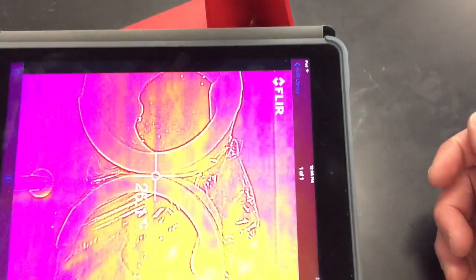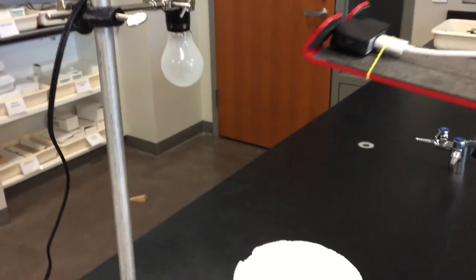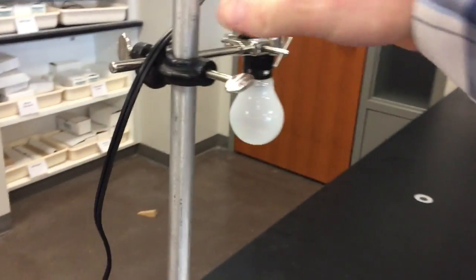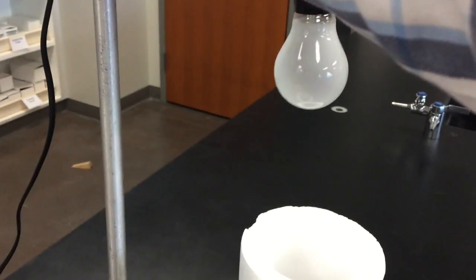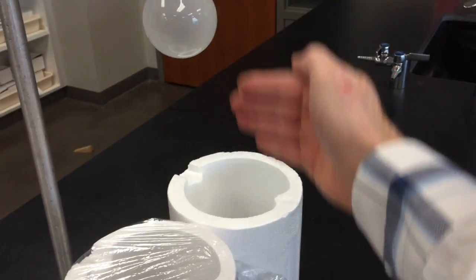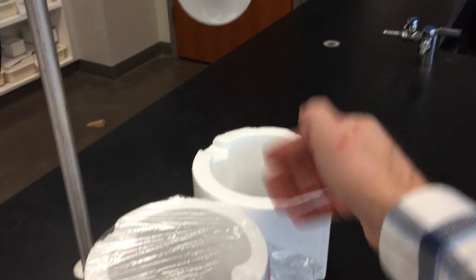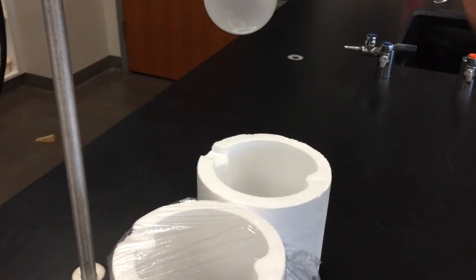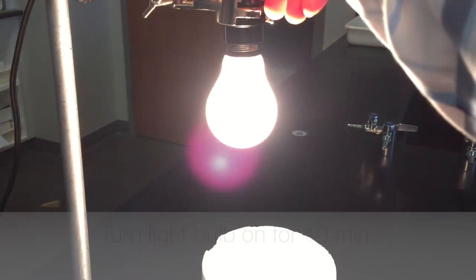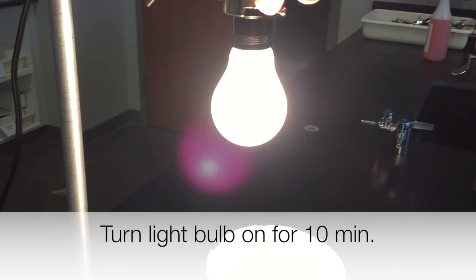All right, and then since you have your starting temperature, you can go ahead and bring the light bulb back to hover centered over the two conditions. Make sure that it's exactly centered. You'll go ahead and turn the light bulb on for 10 minutes. It should stay on.